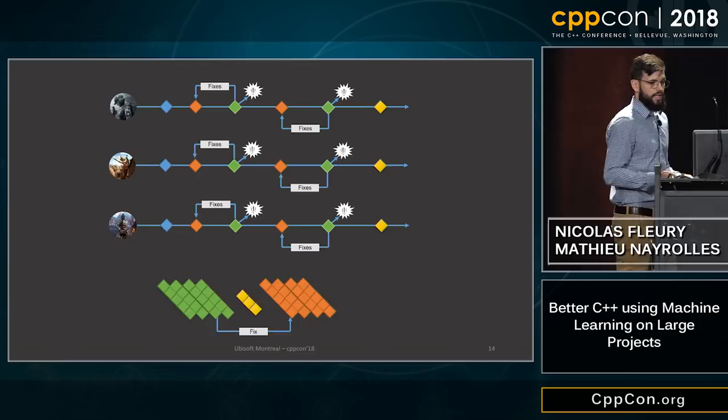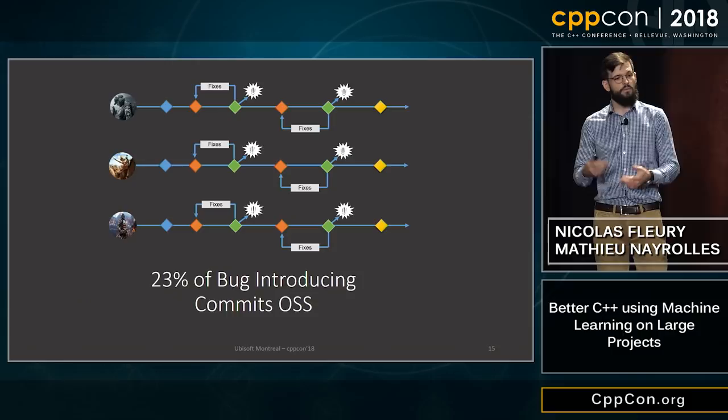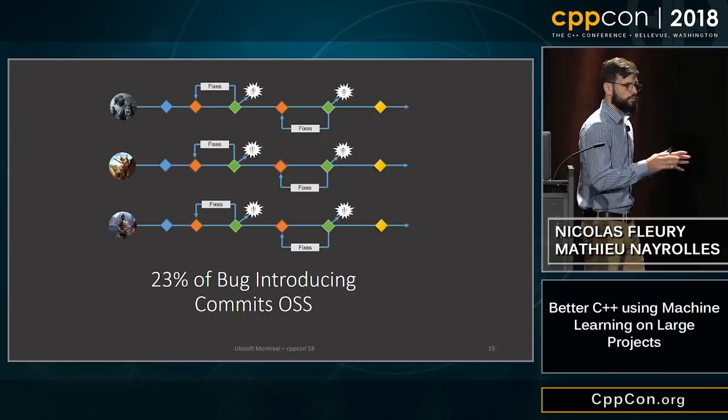For reference, in big open source systems such as those produced by the Apache Foundation, Mozilla Foundation, and Eclipse Foundation, you can find a bug introduction rate of around 23%.